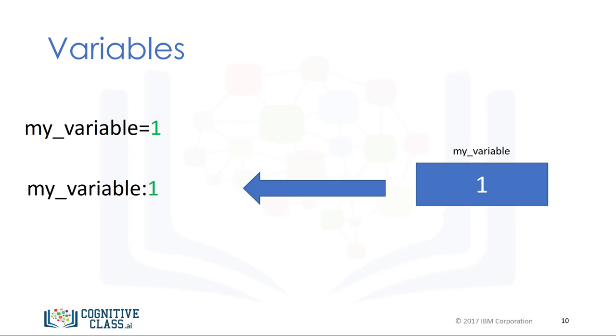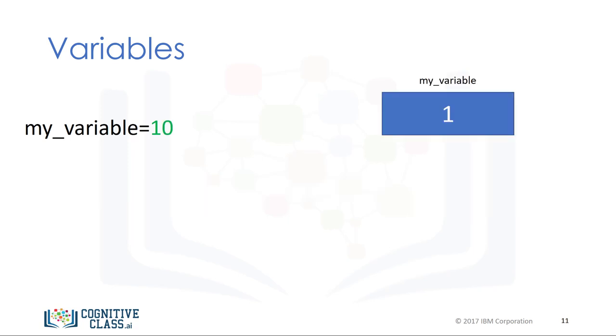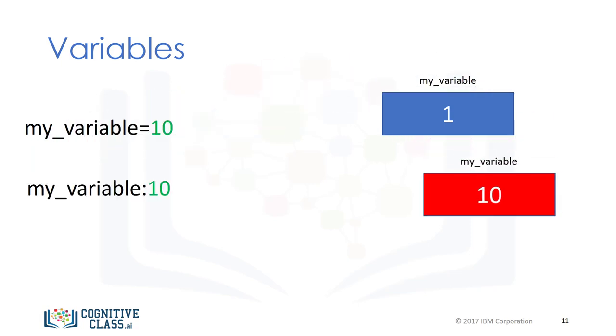We will use a colon to denote the value of the variable. We can assign a new value to my_variable using the assignment operator. We assign a value of 10. The variable now has a value of 10. The old value of the variable is not important.